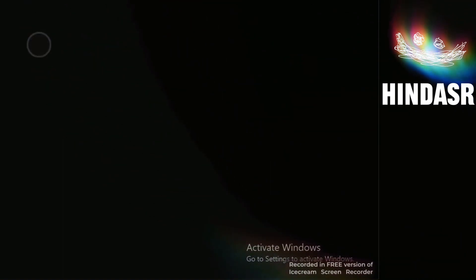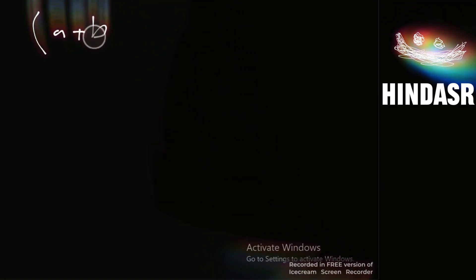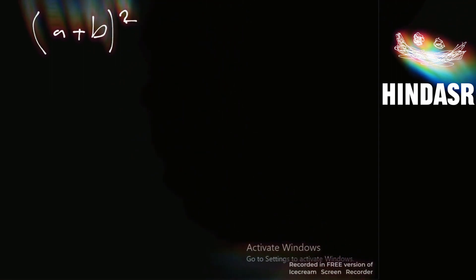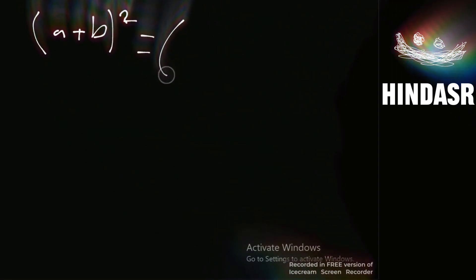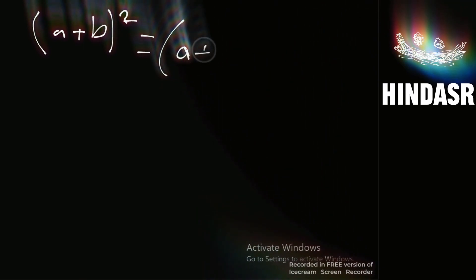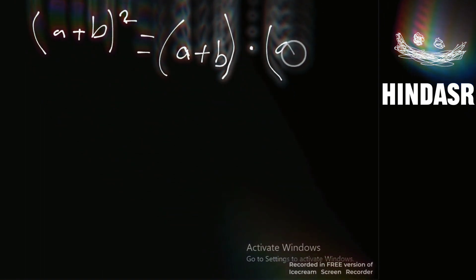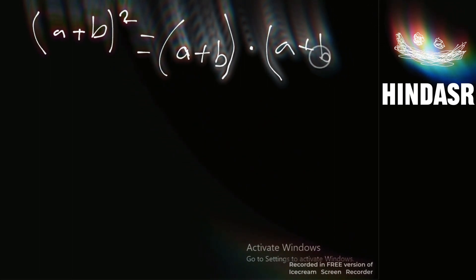So first I'm going to write over here a plus b squared, equals parentheses a plus b times a plus b.